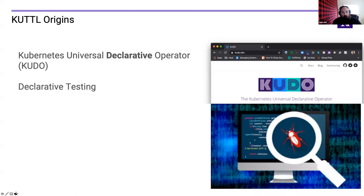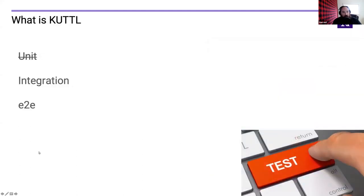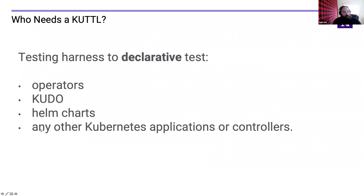KUTTL is a test tool really for integration and end-to-end testing, because it runs on actually live clusters. If you think about all your levels of testing — unit tests that test a single isolated function, integration tests that look at a larger system, and end-to-end tests that verify the entire system in a live environment behaves as expected — KUTTL fits into that integration and end-to-end space. We started testing KUDO operators but quickly expanded to Helm charts, operators, Kustomize, and really any applications or controllers.